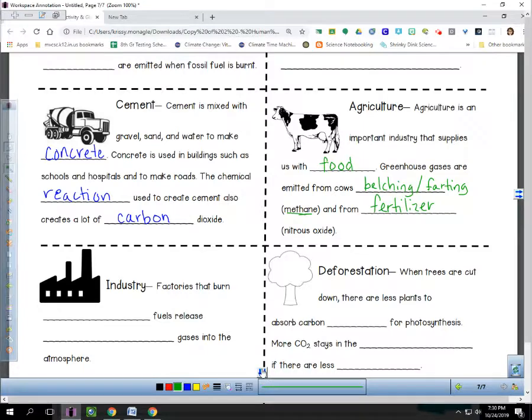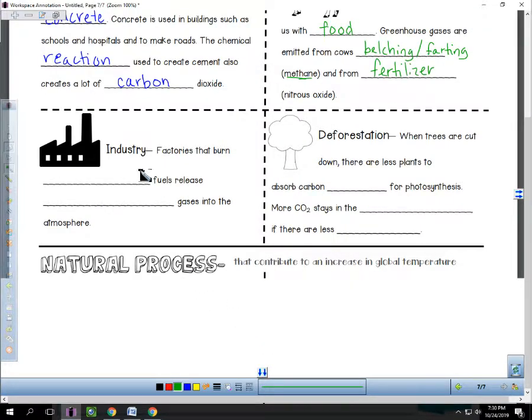Then industry. Industry are those where we have factories that burn the fossil fuels and release greenhouse gases into the atmosphere.